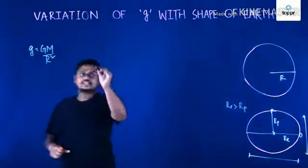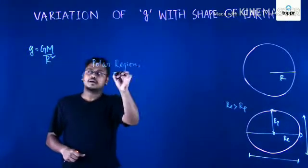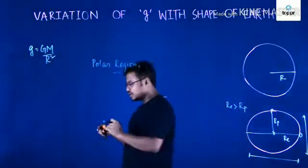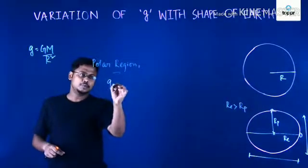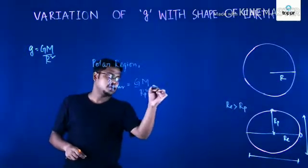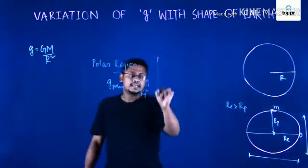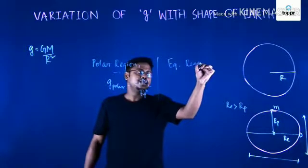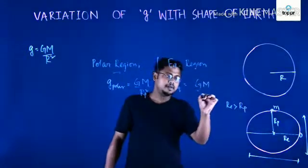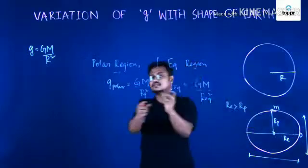In the polar region, the acceleration due to gravity acting on a body depends on the distance of the center of the earth from the body placed on the surface. So we write: g_polar = GM divided by R_p squared, where R_p is that distance. Whereas in the equatorial region, g_equator = GM divided by R_equator squared, where R_equator is the distance of the body in the equatorial plane from the center of the earth.